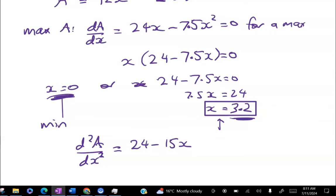So 24 - 15 times 3.2, which gives me negative 24, which is less than 0, so we've found a max.